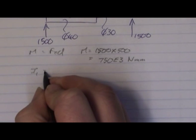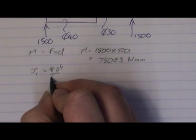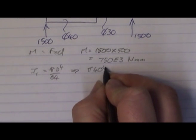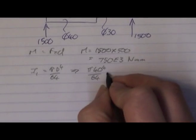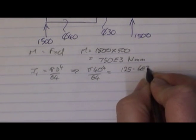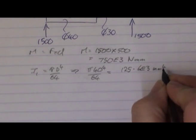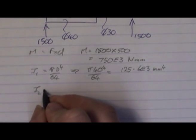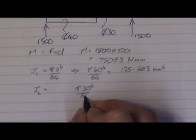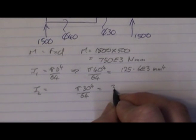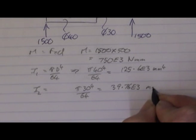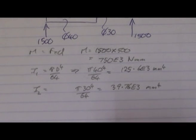My I values: I1, because it's round, is pi·d⁴ over 64, which is pi·40⁴ over 64, giving 125.6 × 10³ mm⁴. I2 will be pi·30⁴ over 64, which equals 39.76 × 10³ mm⁴.